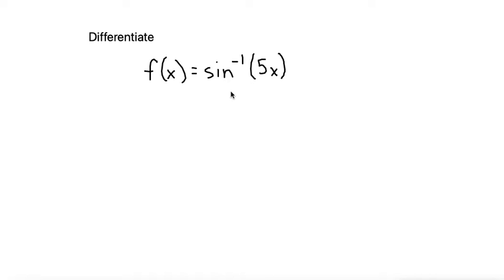So first of all, in order to differentiate this, we need to know the formula for differentiating sine inverse. So I will link down in the description below the formula sheet that I use, which indicates that the derivative of sine inverse of x is equal to 1 over the square root of 1 minus x squared. So if we're just doing sine inverse of x, it would look exactly like this.